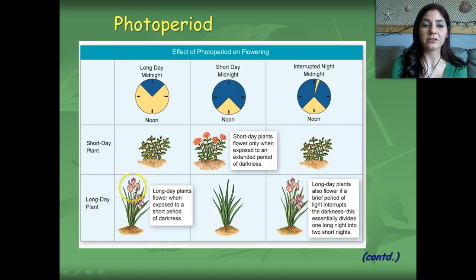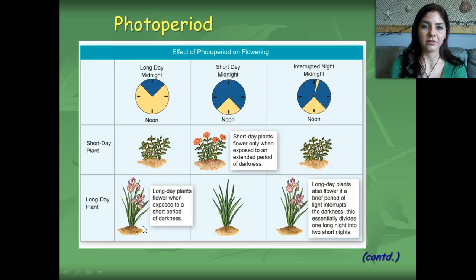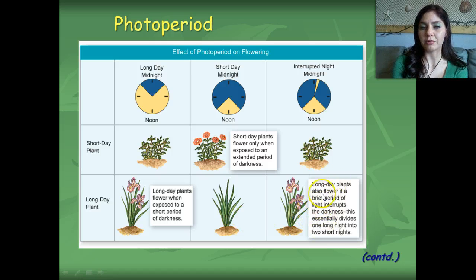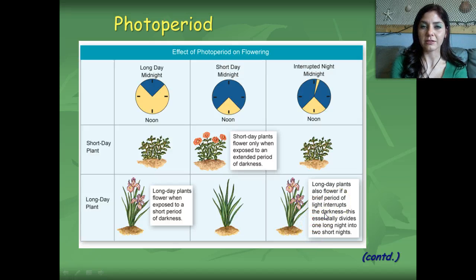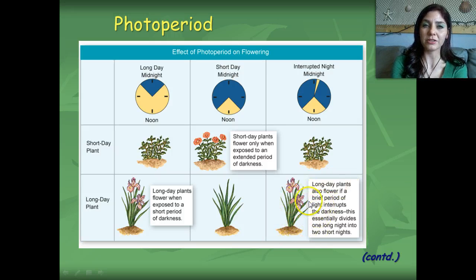Long-day plants, such as lilies and irises, flower whenever we have long days and short nights. They will not flower when we have a very short day and a very long night. Unlike short-day plants, however, irises will flower in interrupted night conditions — so if we have an interruption of dark-light-dark-light, the long-day type of plants will actually flower.